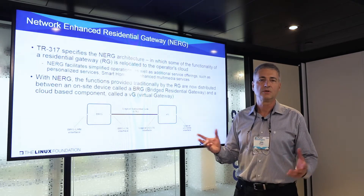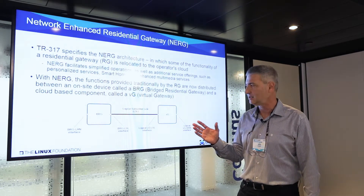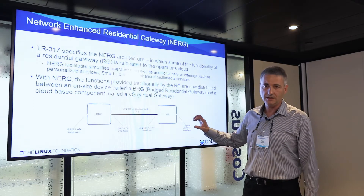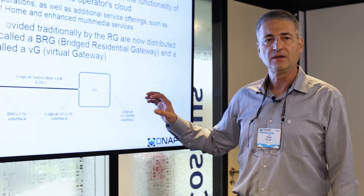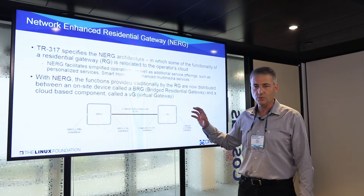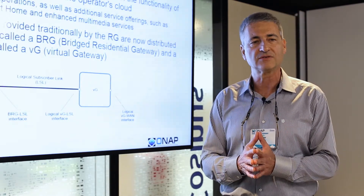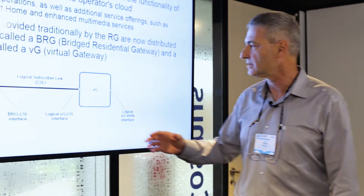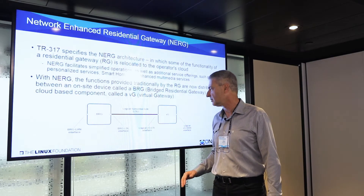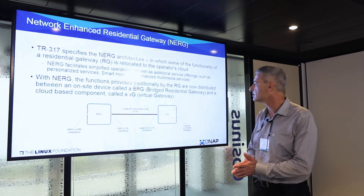Bridged, as opposed to the regular router-based residential gateway — that is the traditional one — and this is a hint that it is a much simpler box. The other part is called the VG, Virtual Gateway, and this is really a set of virtual functions that are instantiated in the operator's cloud, and they are the ones doing the work of the residential gateway. The BRG is only doing what is absolutely necessary within the home, and since the functionality is divided between two parts, there needs to be a dedicated connection between them, called the Logical Subscriber Link or LSL.